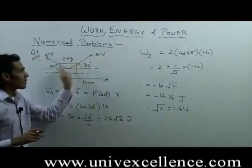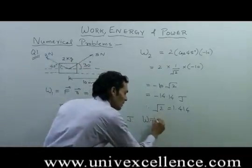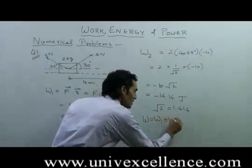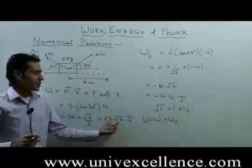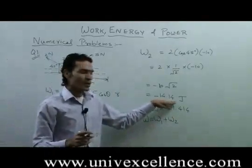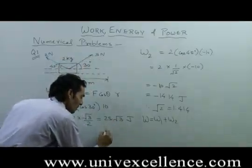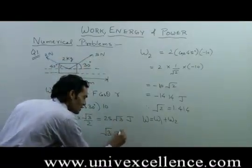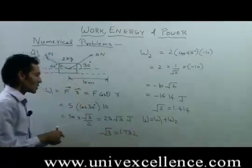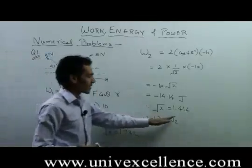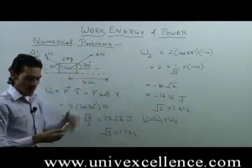The net work done by these 2 forces is W = W1 + W2, which is 25√3 minus 14.14. This can be further solved by putting the value of √3 which is 1.732. By the addition of these 2 work values, we can calculate the total work done on this block.